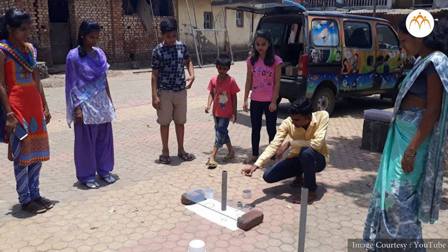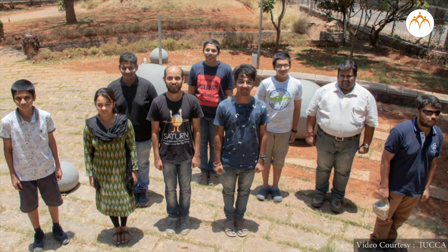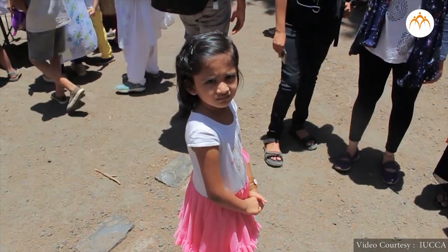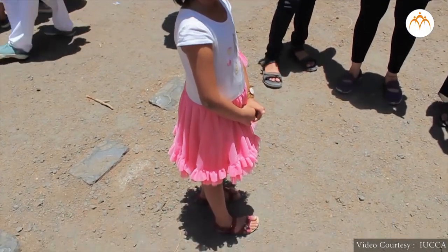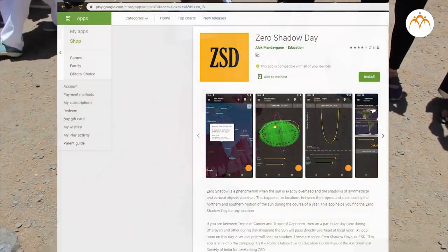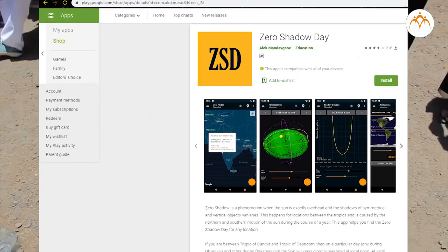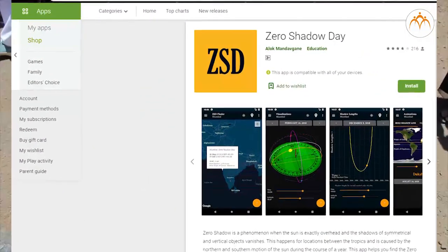Here are some pictures taken at Ayuka, Pune on zero shadow day. You can also download the zero shadow day app on Android phone and check the day of the year on which there will be no shadow at noon.